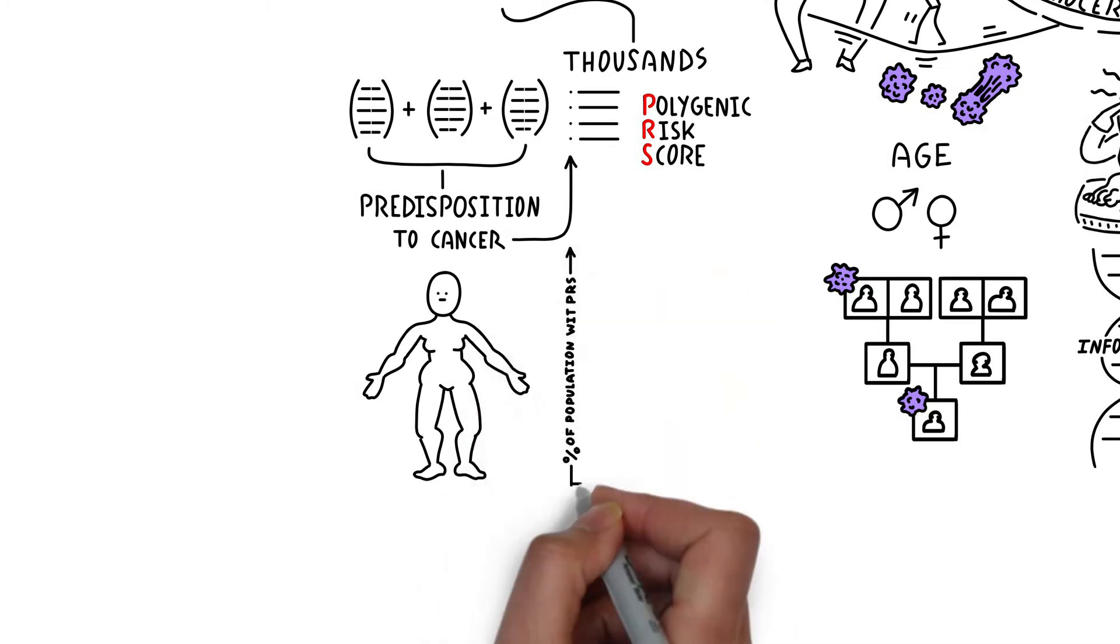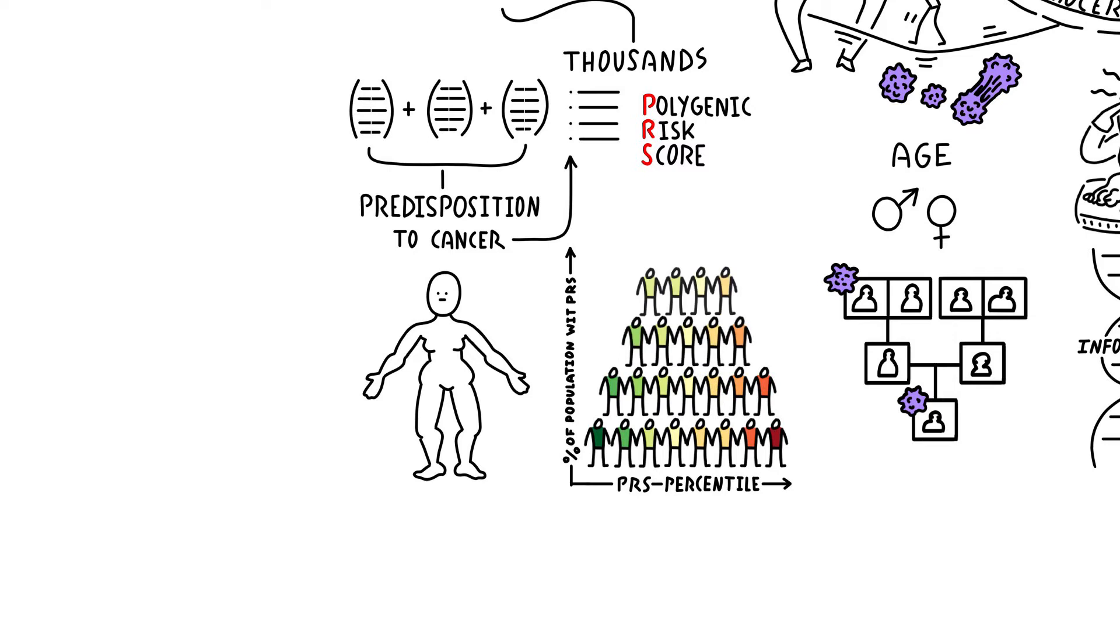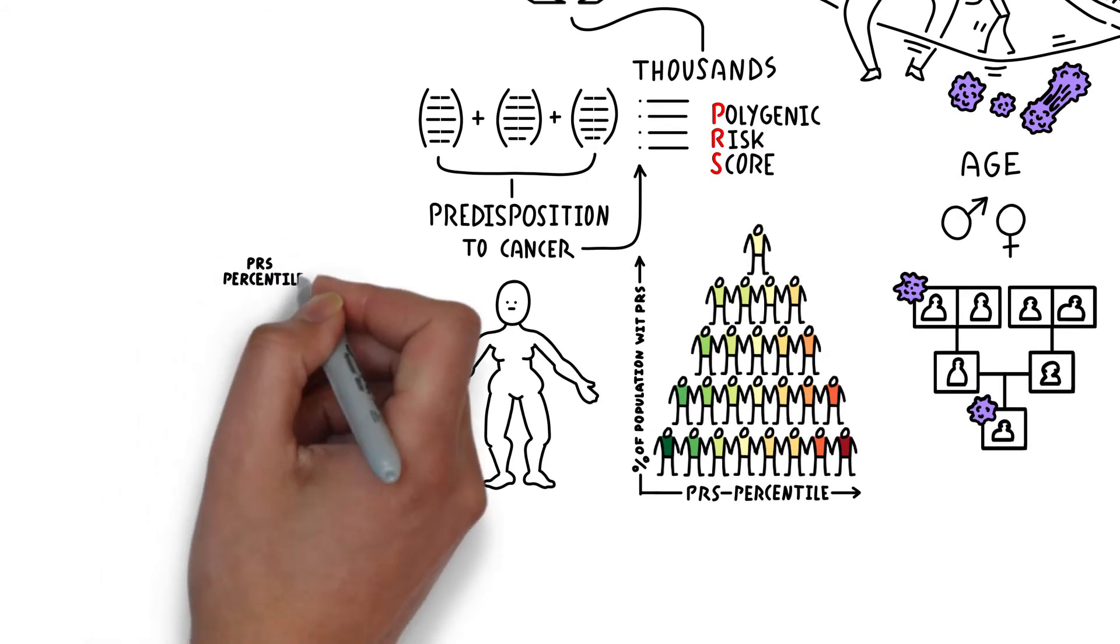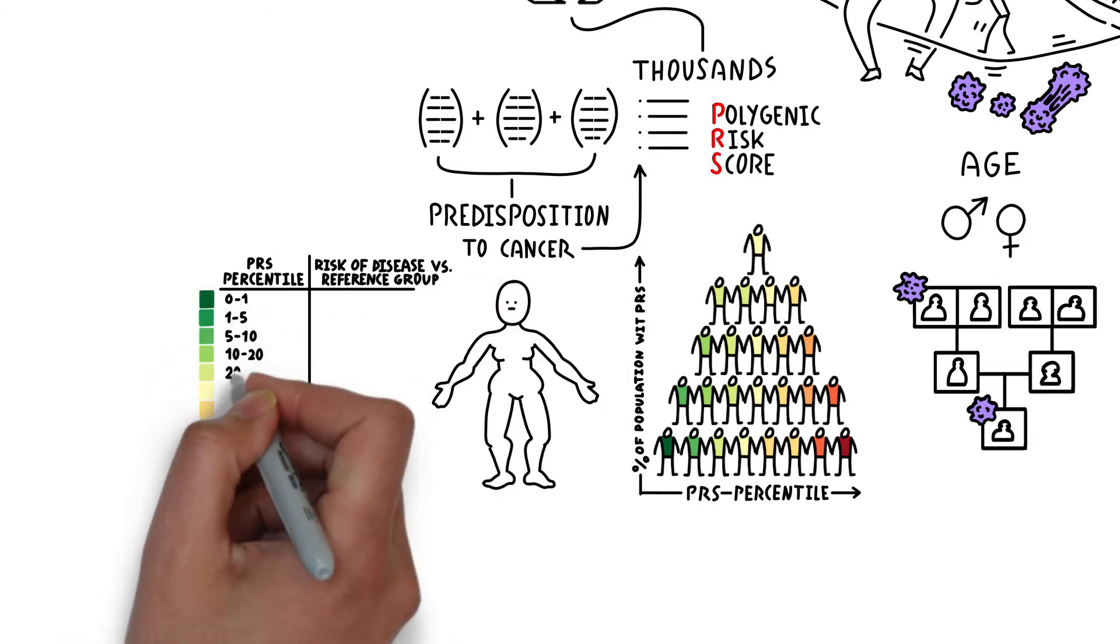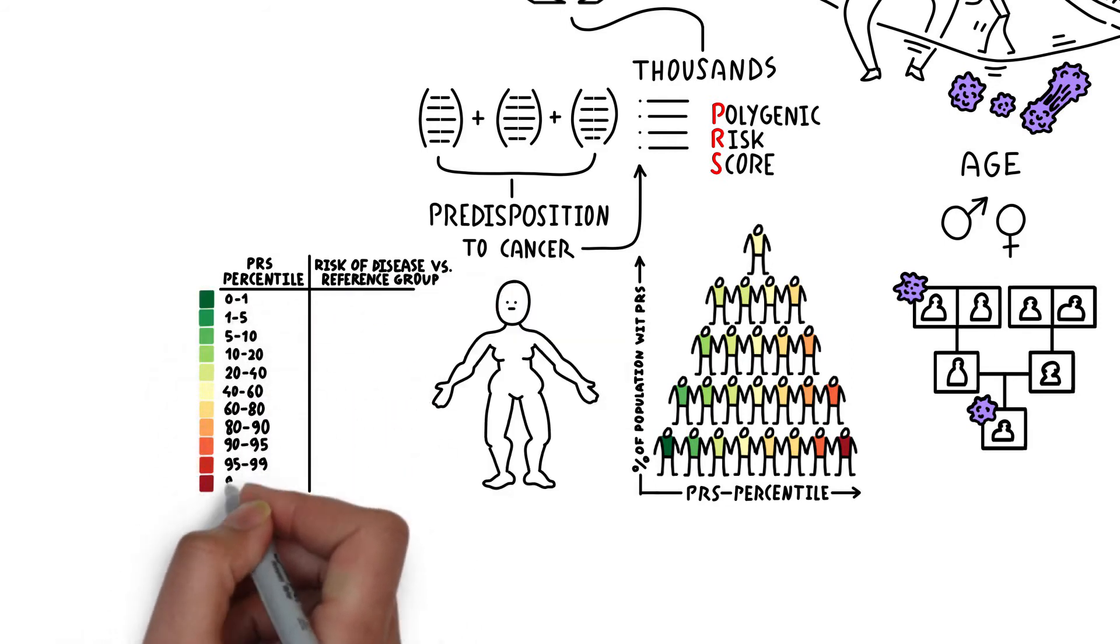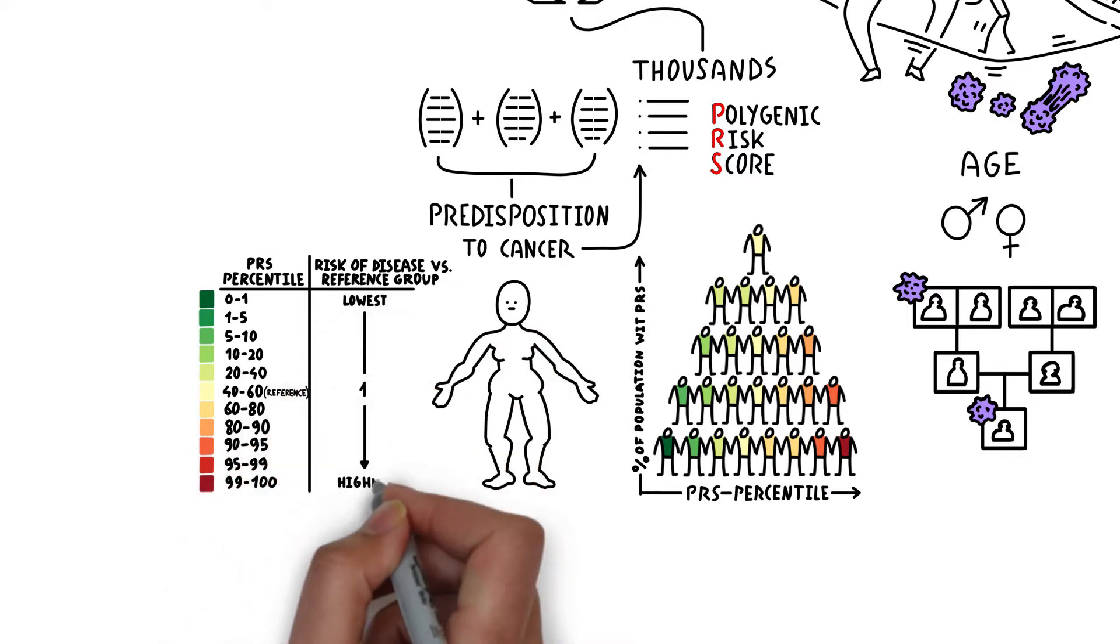In the population, the distribution of polygenic risk scores follows the shape of a bell curve. This means that most people will have a PRS in the middle, putting them at average risk, while others may find themselves in the tail ends of this distribution, indicating either low or high genetic risk.